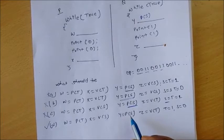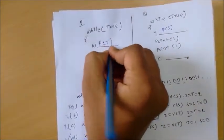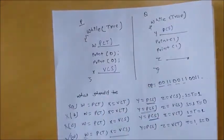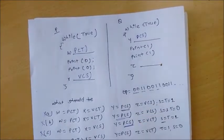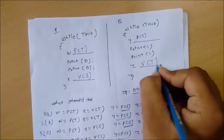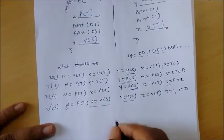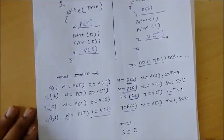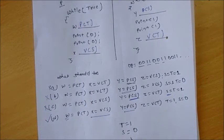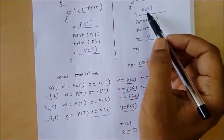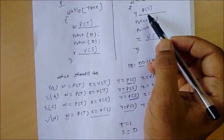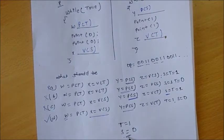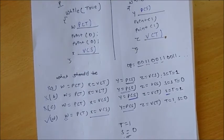Option D has a down operation on T at W, an operation on X, an up operation on S at one point, a down operation on S at Z, and an up operation on variable T. The initial value of semaphore variable S is 0 and T is 1. Since the initial value of S is 0, process Q cannot perform a successful down operation on S — it will be blocked. A successful down operation on a binary semaphore requires the value to be 1.